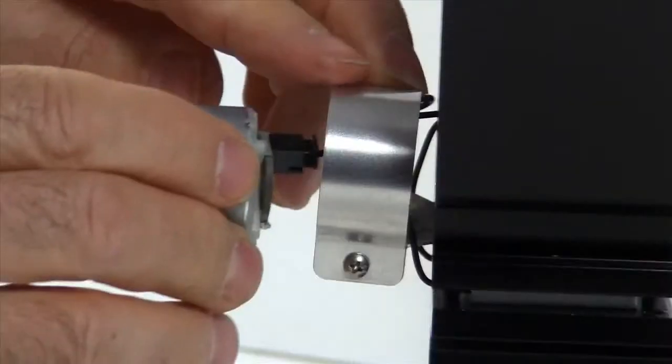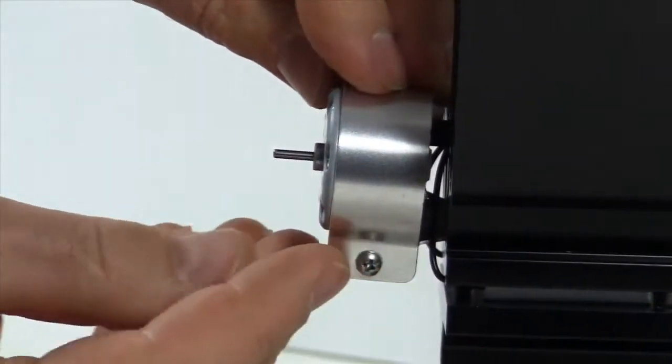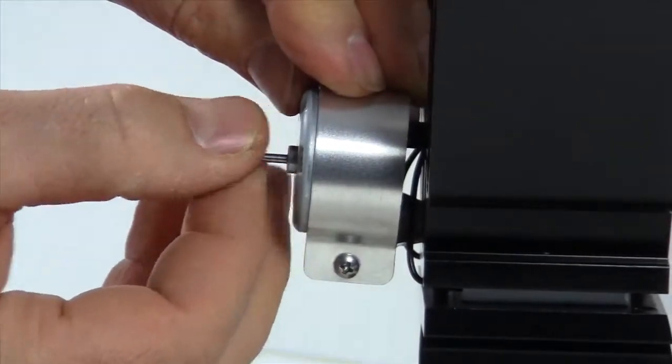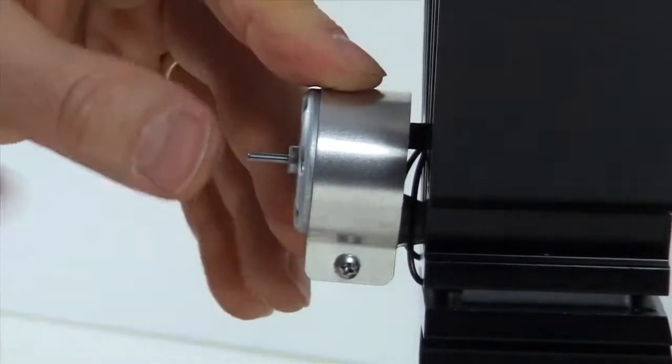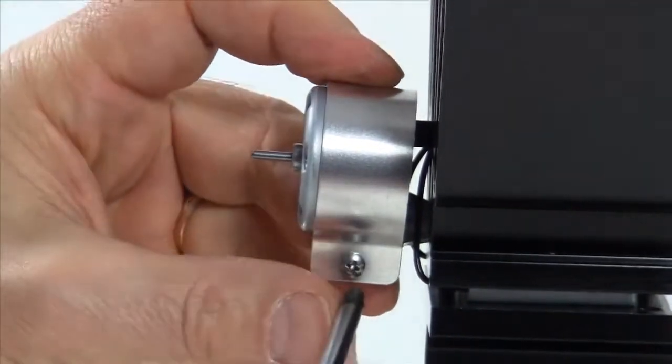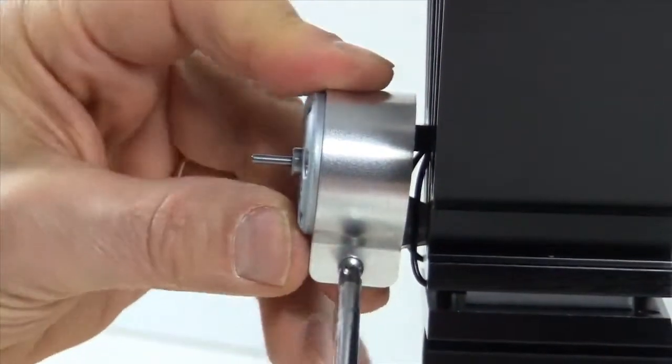Now we put the motor back into the motor bracket. We want to leave the motor sitting about a sixteenth of an inch outside of that motor bracket, and we want to tighten that screw to secure it in place.